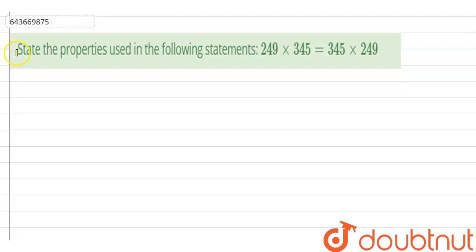Hi guys, we have a question right now. State the properties used in the following statement. What is the statement? 249 into 345 equal to 345 into 249.